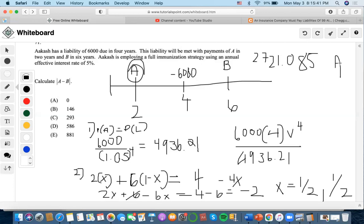Now for B's case, it would be, again, present value 4936.21 divided by 2, then times 1.05 to the 6, and it's going to be 3307.049.